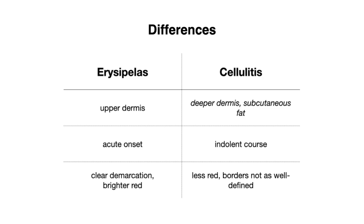First is location: erysipelas is confined to the upper dermis, whereas cellulitis involves the deeper dermis and subcutaneous fat. Although both are acute bacterial infections, erysipelas tends to be more acute in onset when compared to cellulitis.